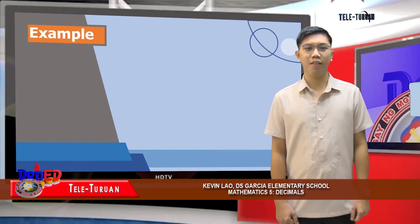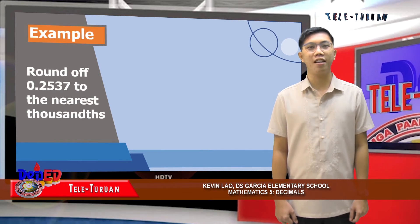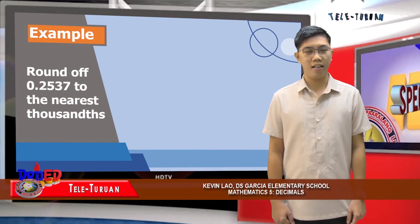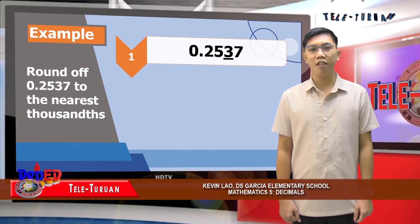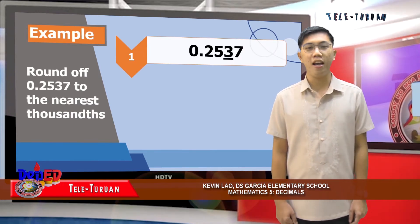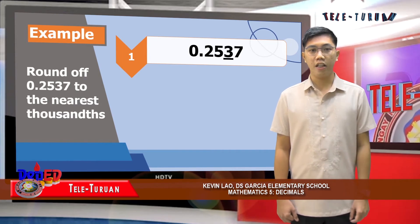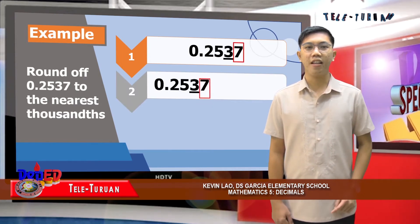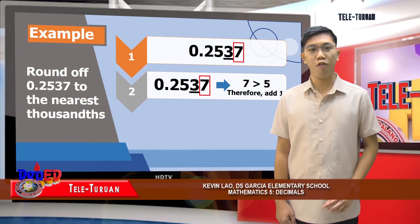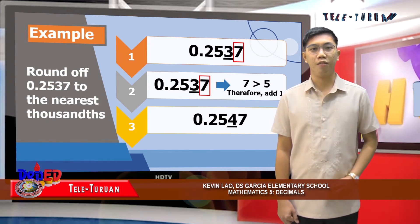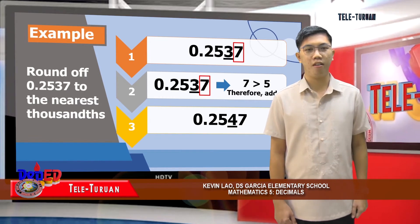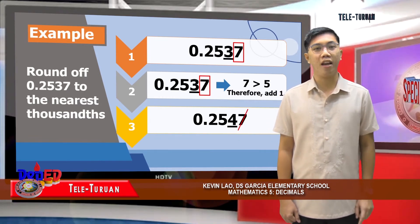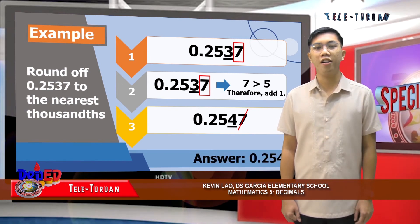Another example: round two thousand five hundred thirty-seven ten-thousandths to the nearest thousandths. The rounding place is thousandths, so we have three. The digit to the right of three is seven. Seven is greater than five; therefore, we add one to the rounding place. Three will become four. Drop all the digits after the rounding place. The answer is two hundred fifty-four thousandths.